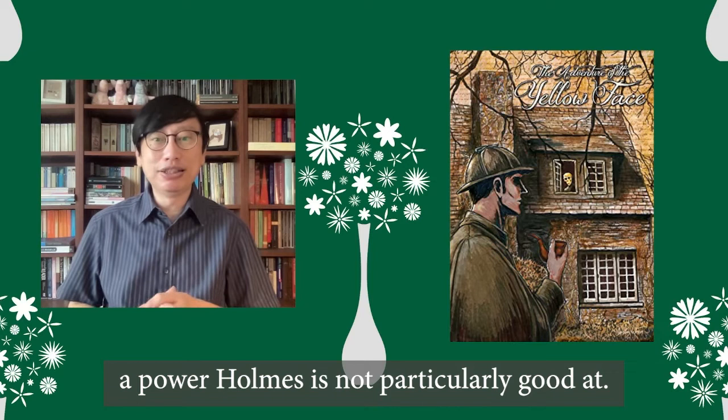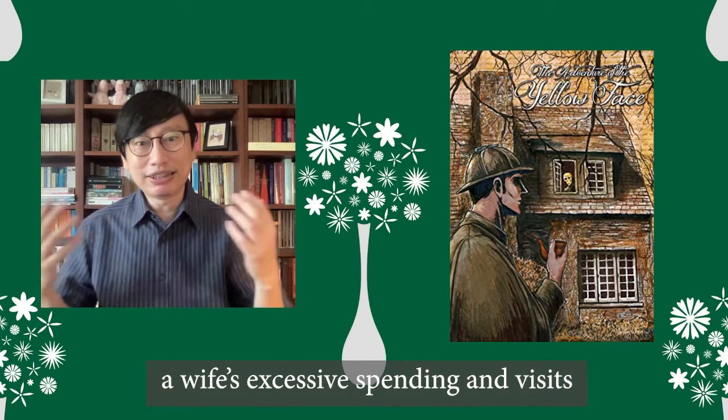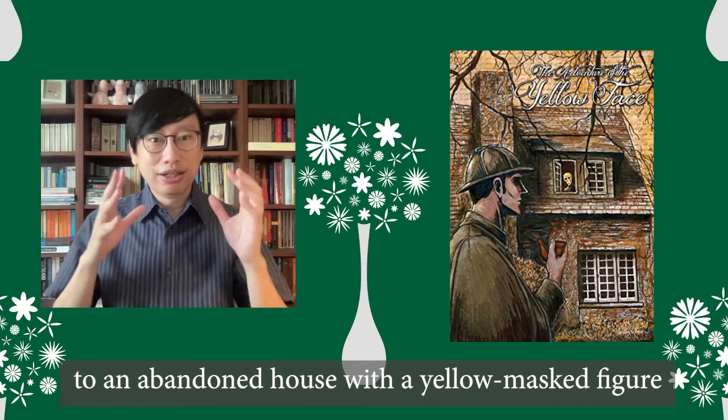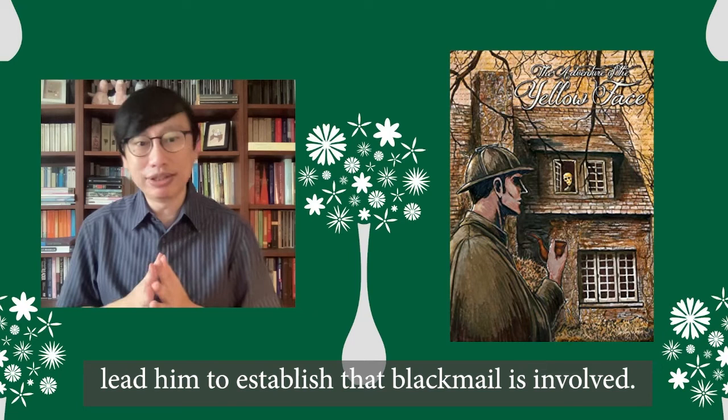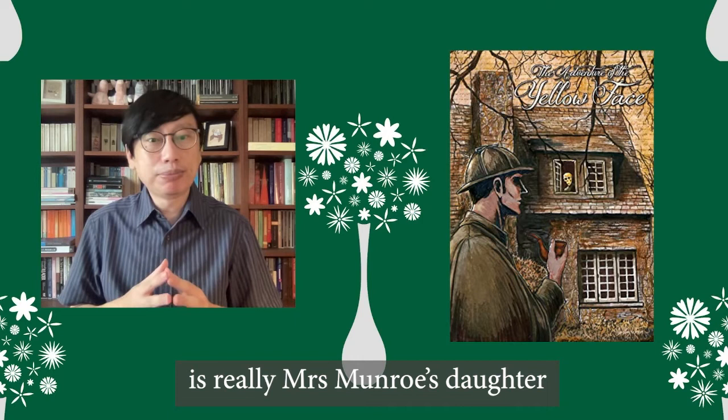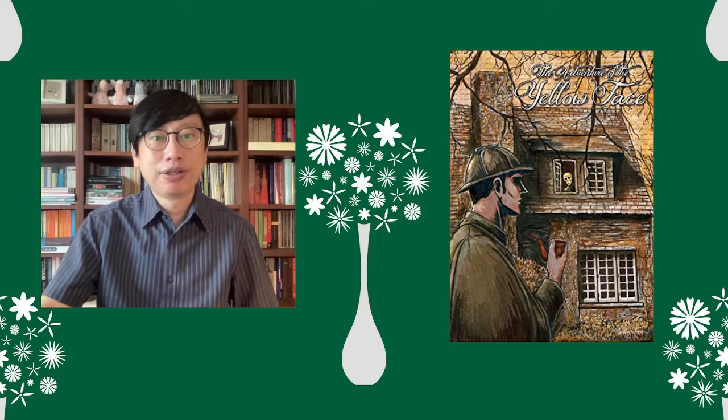In The Adventure of the Yellow Face, a wife's excessive spending and visits to an abandoned house with a yellow masked figure leads Holmes to establish that blackmail is involved. It turns out that the figure in hiding is really Mrs. Monroe's daughter from a first marriage, an interracial one.